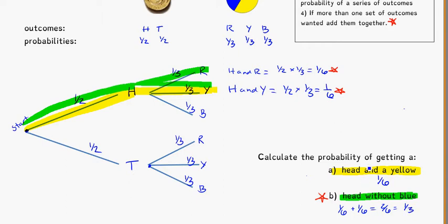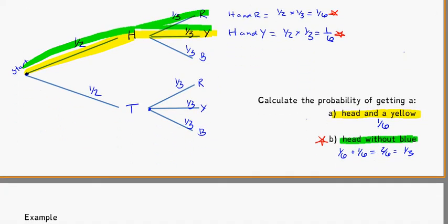So in the first example — head and yellow — I'm finding one particular outcome, so I times along the branch: 1 half times 1 third gets me 1 sixth. In the next problem — head without a blue — there are two ways to get that: with red and with yellow. Since there's more than one way, I find the probability for each by multiplying along the branch, then add those probabilities together. With probability trees: times along the branch, and if there's more than one outcome you want, add them up. Also note that for any set of outcomes, like head and tail, the probabilities should add up to 1. All three spinner probabilities also add up to 1.